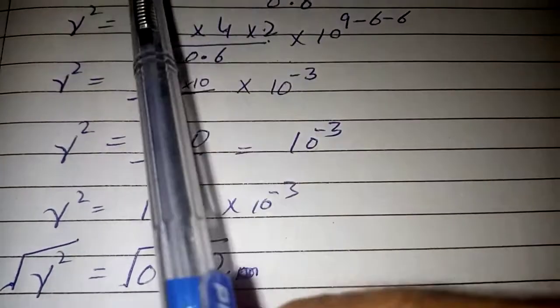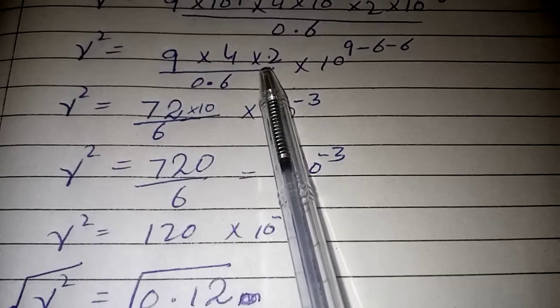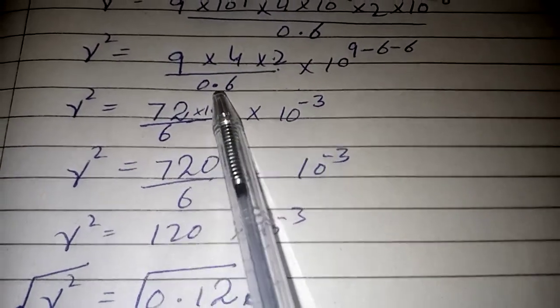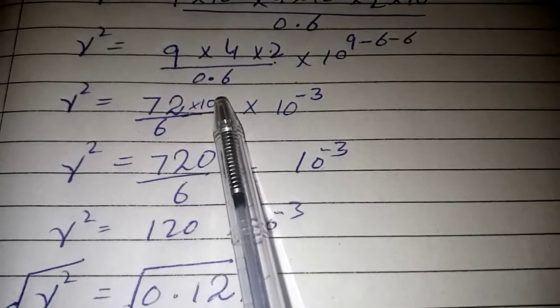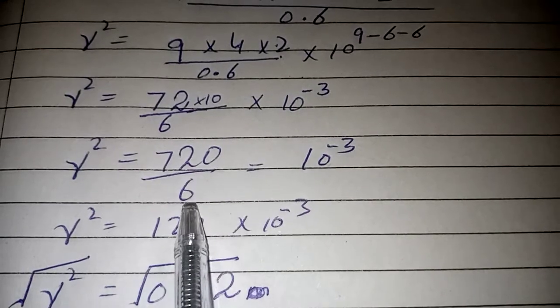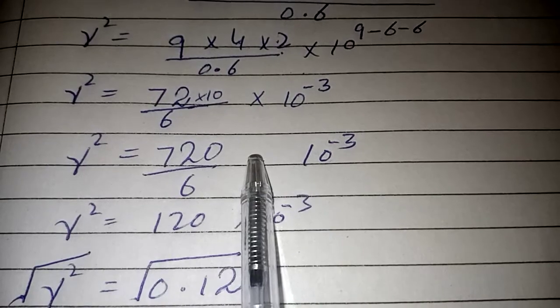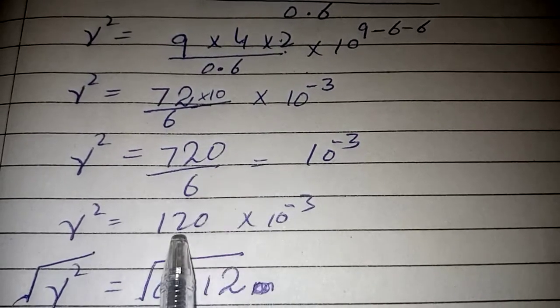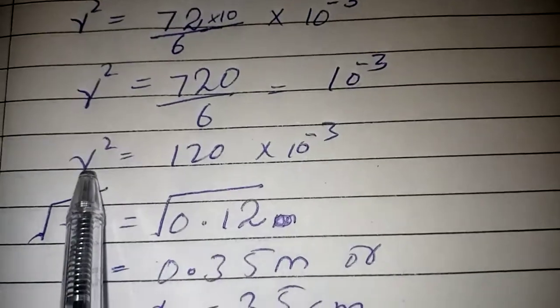This gives us 72 (4 times 9 times 2 equals 72). Now 0.6, removing the decimal point, becomes 6 upon 10, so we get 720 upon 6 multiply by 10 power minus 3. This equals 120 multiply by 10 power minus 3.